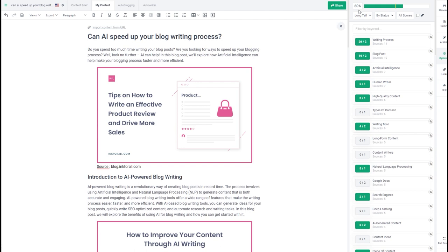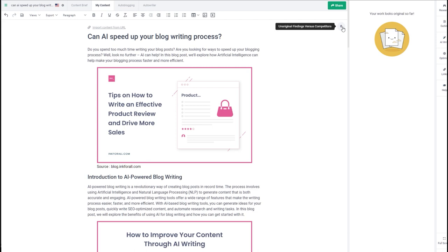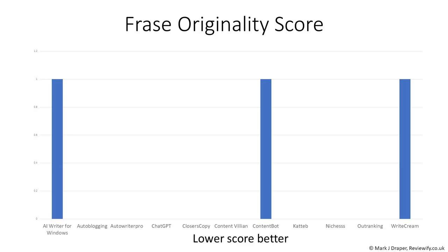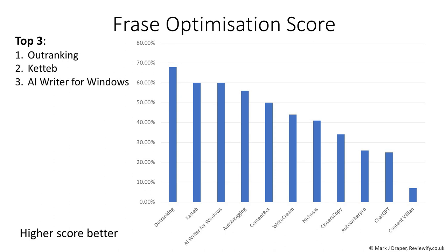I then ran each article through Phrase to get the optimization score as well as the originality score. That originality score basically checks to see not if you've strictly copied word for word, but if paragraphs seem a little bit too similar and it looks like content has just been reworded. Again I was pleased to see there were no real issues with this. On optimization, Phrase scans the internet and decides what topics people have covered and checks to see if your article includes them — so a high number is better.